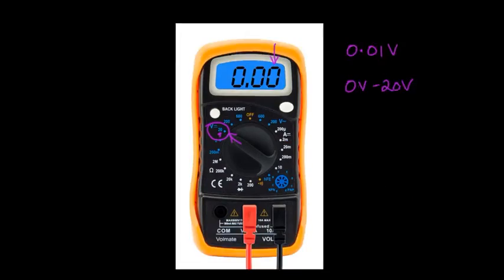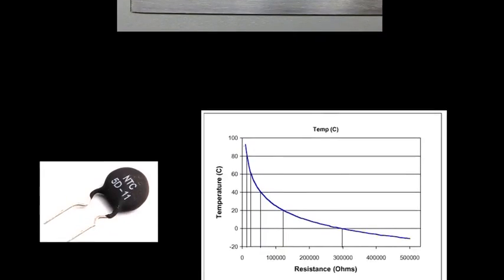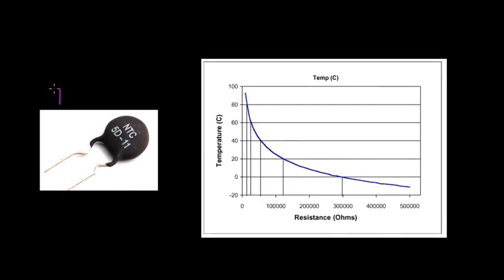Here's an example of something which is non-linear. This is a thermistor, and a thermistor changes its resistance as it is heated or as its temperature increases or decreases. Here's the graph.